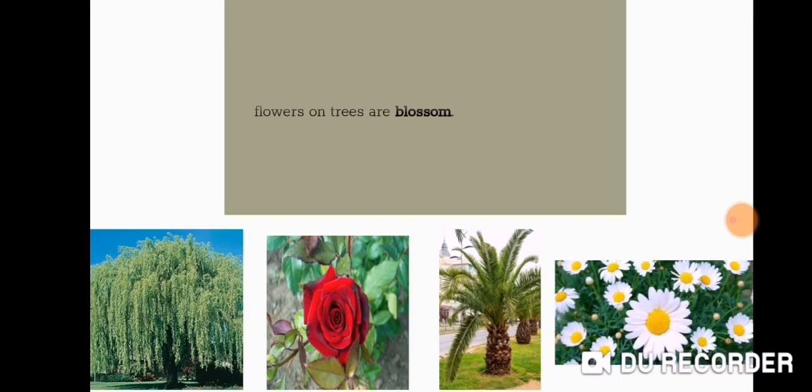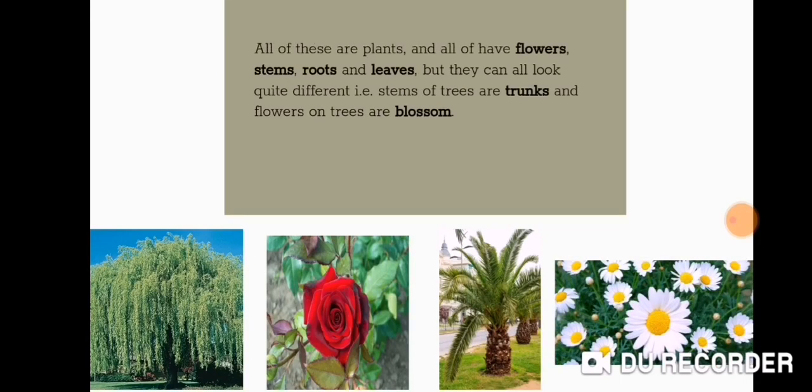Here we have four plants. All of these are plants and all of them have flowers, stems, roots and leaves, but they can all look quite different. For example, stems of trees are trunks and the flowers on trees are blossom.